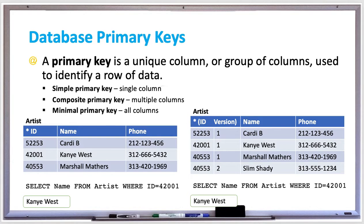So the primary key for Marshall Mathers is ID 40553 and version one. Whereas the primary key for Slim Shady is ID 40553 with version two. The combination of those two columns makes the composite primary key and also makes it unique.